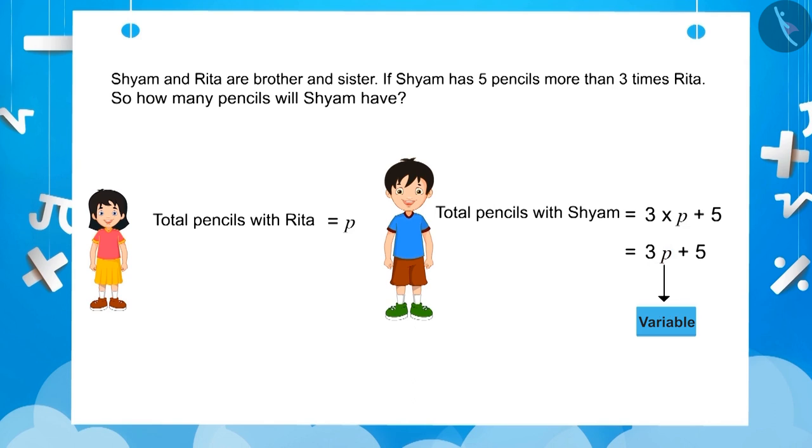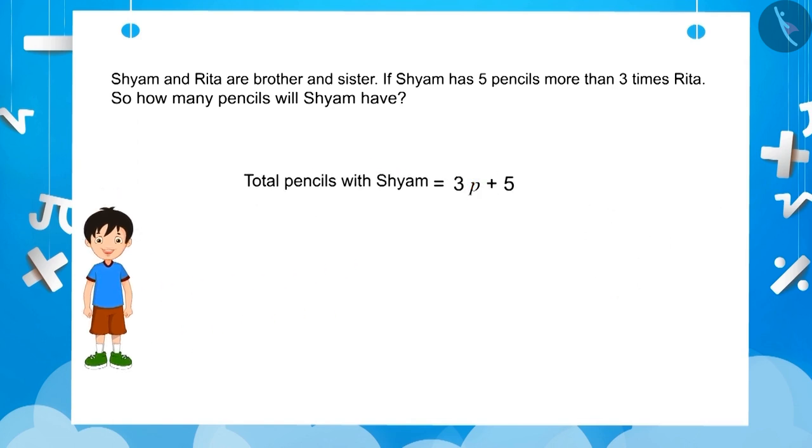Now, let's find out the total number of pencils with Shyam. To find this, we have to find out the value of P because the number of pencils with Shyam depends on the number of pencils with Rita. Different values of P will give different values to the expression 3P plus 5.